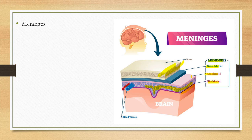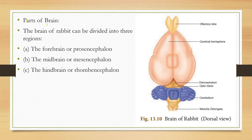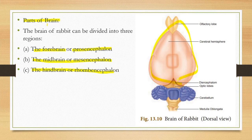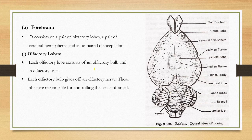The sub-arachnoid space is filled with fibers, blood vessels, and a fluid called cerebrospinal fluid. Now moving on to the central nervous system — the brain has three divisions: the forebrain or prosencephalon, the midbrain or mesencephalon, and the hindbrain or rhombencephalon.